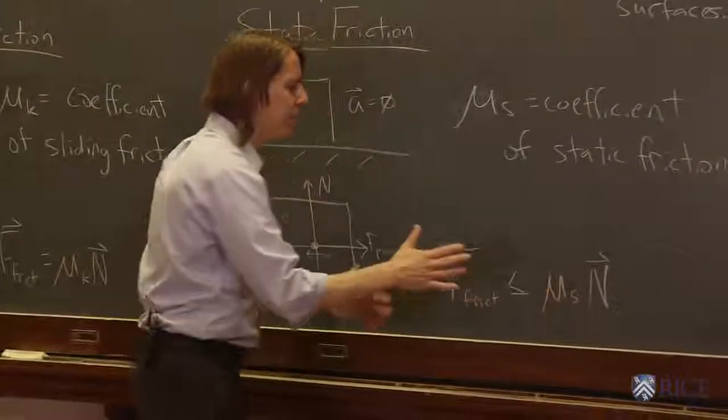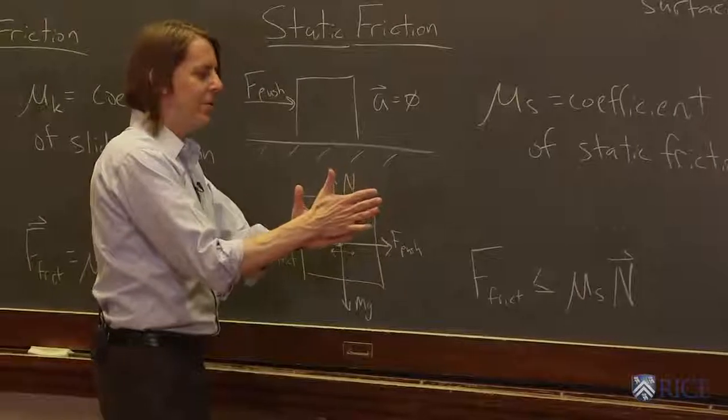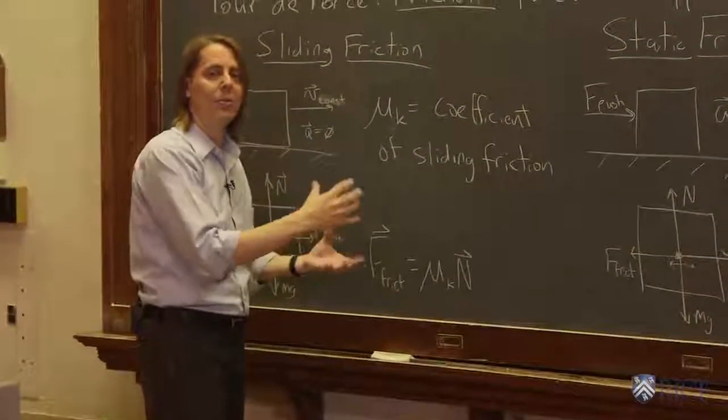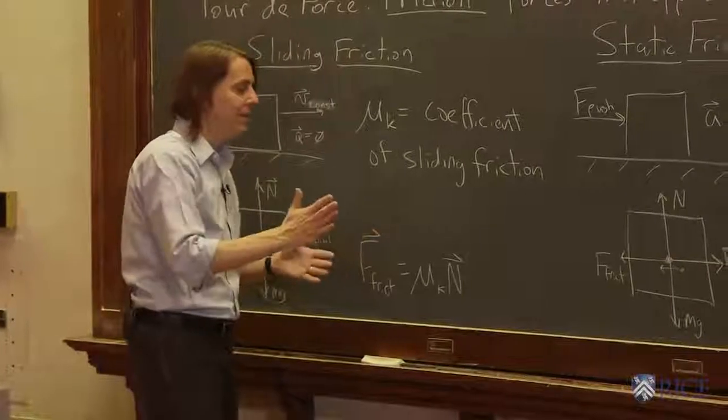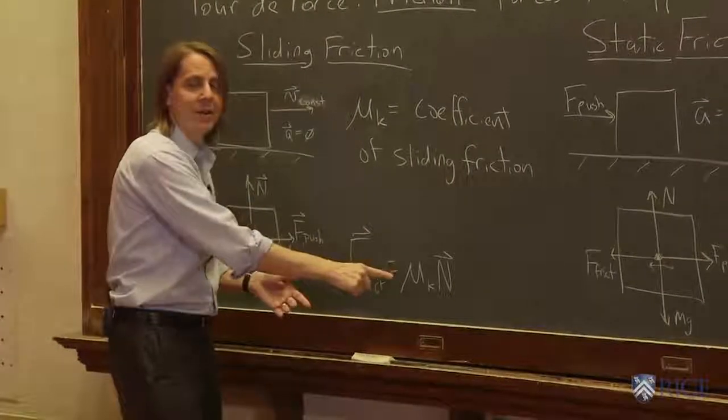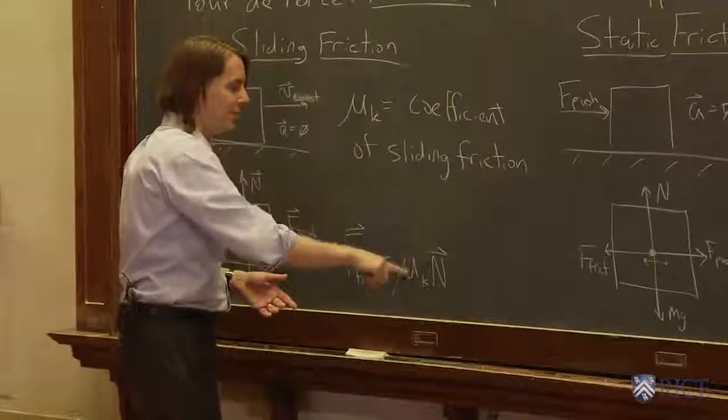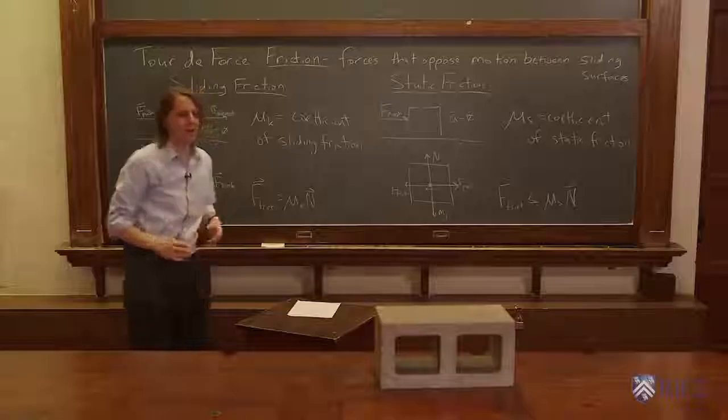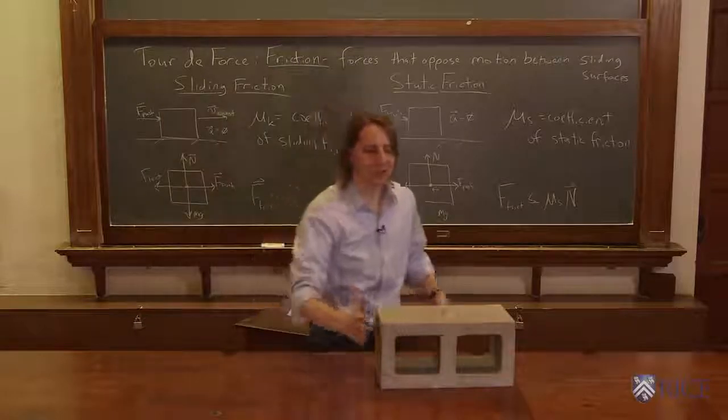So what happens is, you push, you push, you push, and as soon as you overcome the static friction, suddenly you have a greater than zero net force, and then to keep a constant velocity, you have to slow down. You have to pull back. Because as soon as you overcome friction, suddenly the friction force recedes, becomes smaller, and you really accelerate.